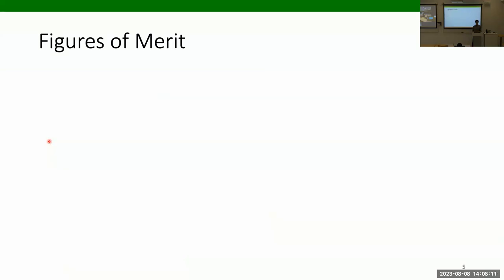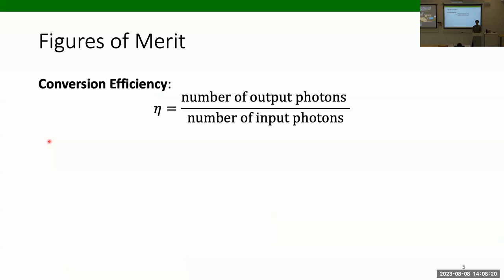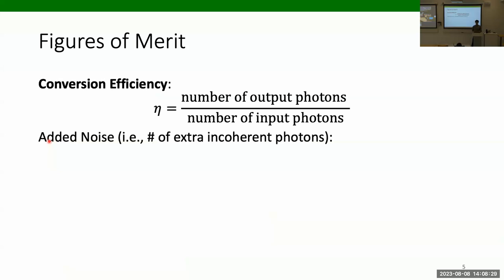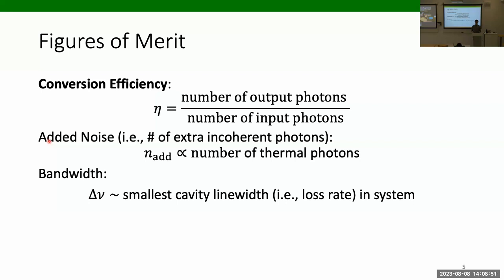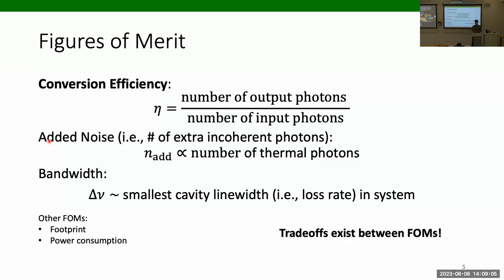There are a few key figures of merit that describe how well these systems work. The first is the conversion efficiency — simply the number of output photons over the number of input photons, ideally equal to one. Another important figure of merit is the added noise, which is the number of extra incoherent photons the transducer itself adds, with the dominant source typically being extra thermal photons from operating at finite temperature. Another is the bandwidth, typically set by the smallest cavity linewidth in the system. Footprint and power consumption are also nice-to-have figures that become more important as this technology matures, and trade-offs exist between all of these figures.